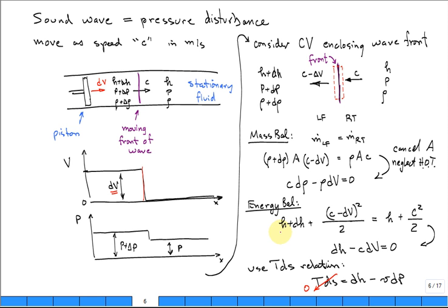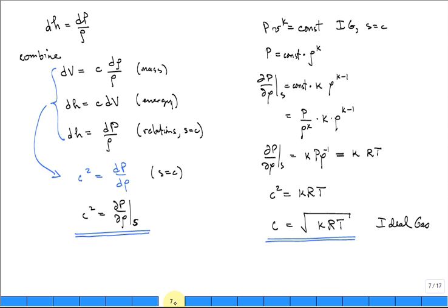Performing an energy balance for the same control volume — in on the right equals out on the left — and doing some algebra, you get DH equals C times DV. Then using the TDS thermodynamic relations, and noting that we're considering an isentropic disturbance, TDS equals zero, so DH equals VDP. Putting these pieces together by combining the mass balance, energy balance, and the isentropic thermodynamic relation, you get C squared equals dP/dρ at constant S — which is exactly what we set out to show.